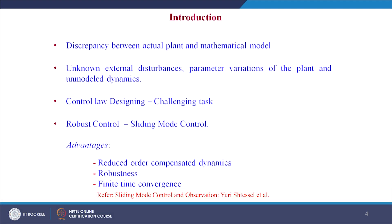Coming to the introduction, in most of the situations there is a discrepancy between the actual plant and its mathematical model. This discrepancy is due to unknown external disturbances, parameter variations of the plant, and unmodeled dynamics. Due to these reasons, designing a control law is a challenging task. The control law that can take care of these causes is called a robust control law.